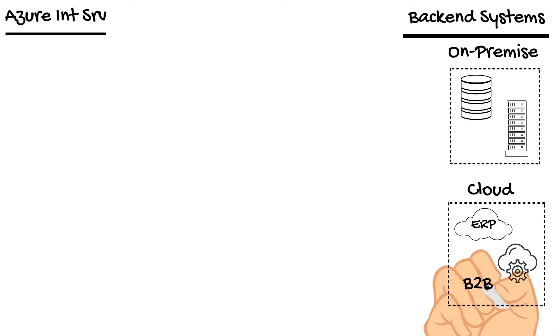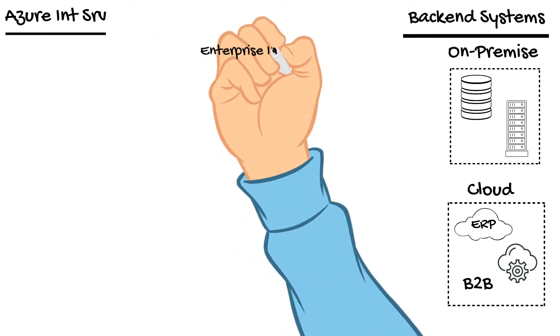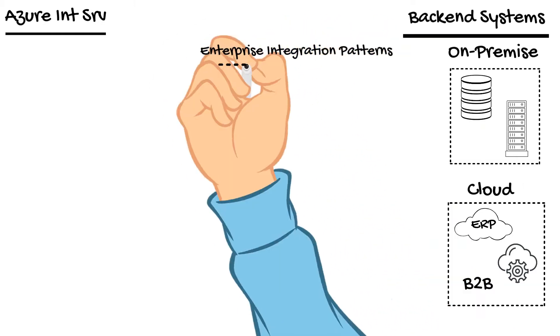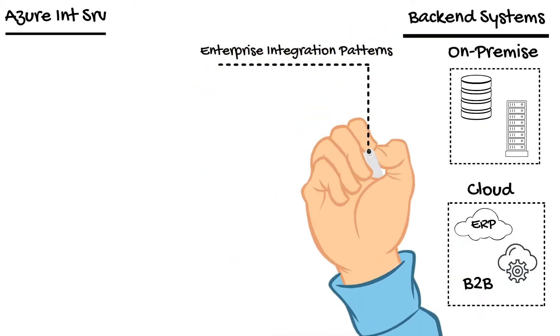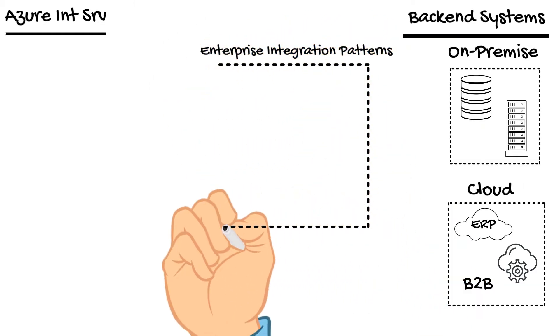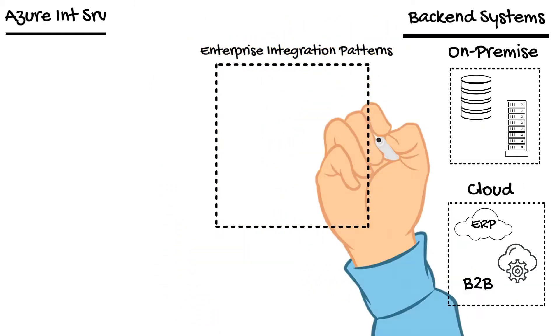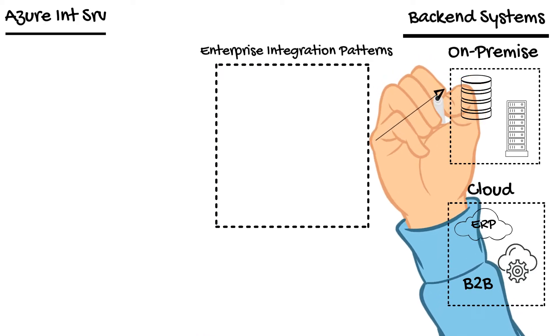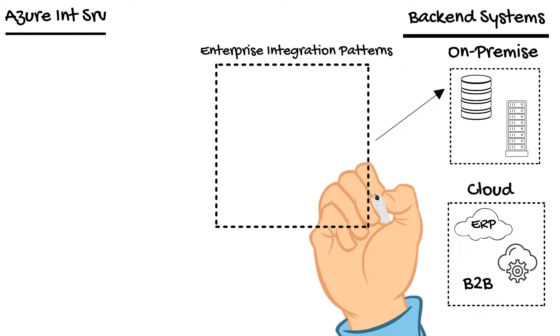If you have ever read the Enterprise Integration Patterns book by Gregor Hopp and Bobby Wolf, or have visited their website, you would know that they categorize enterprise integration strategies into four basic patterns.